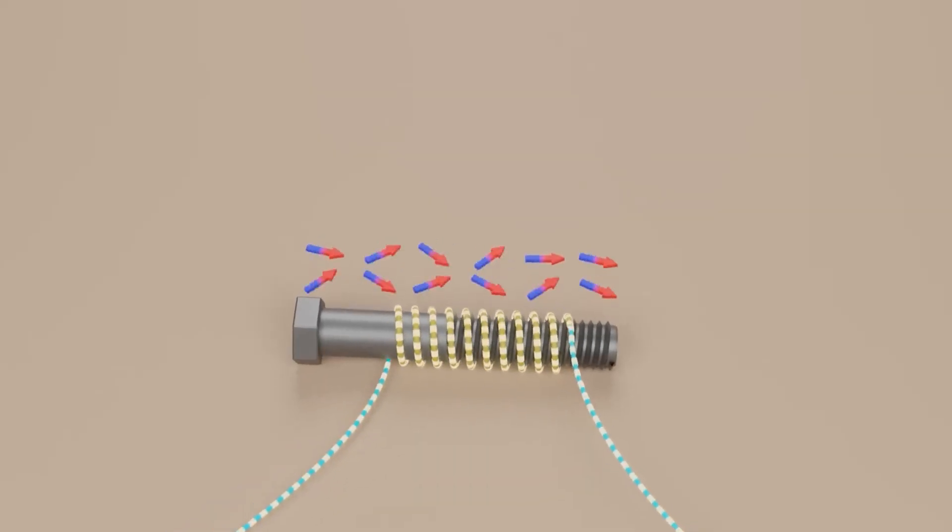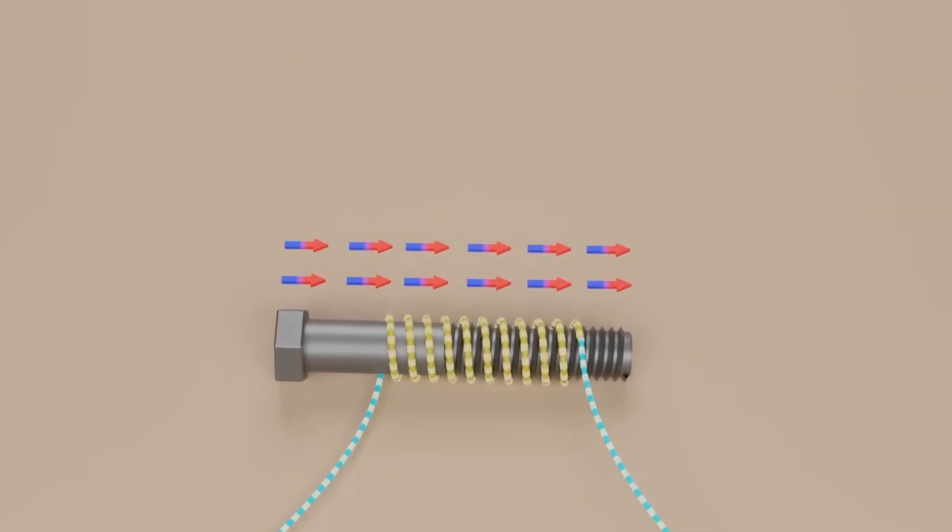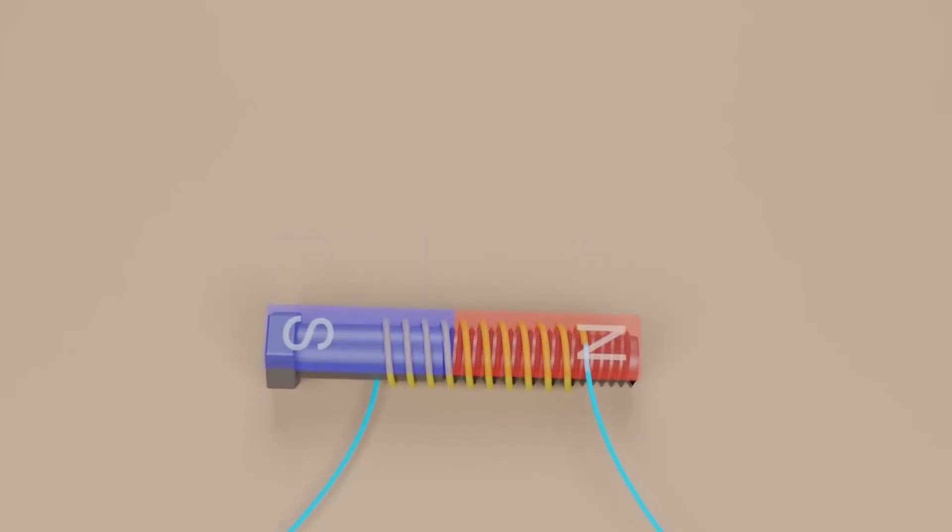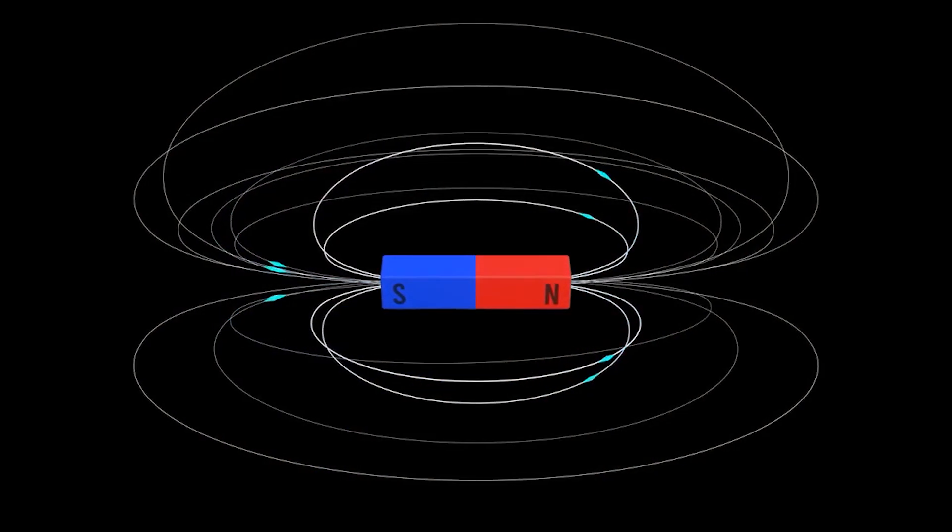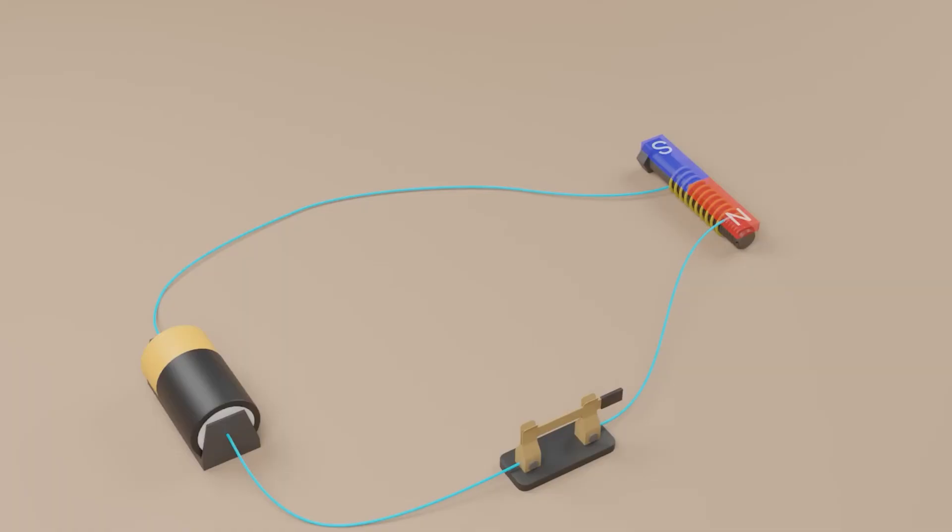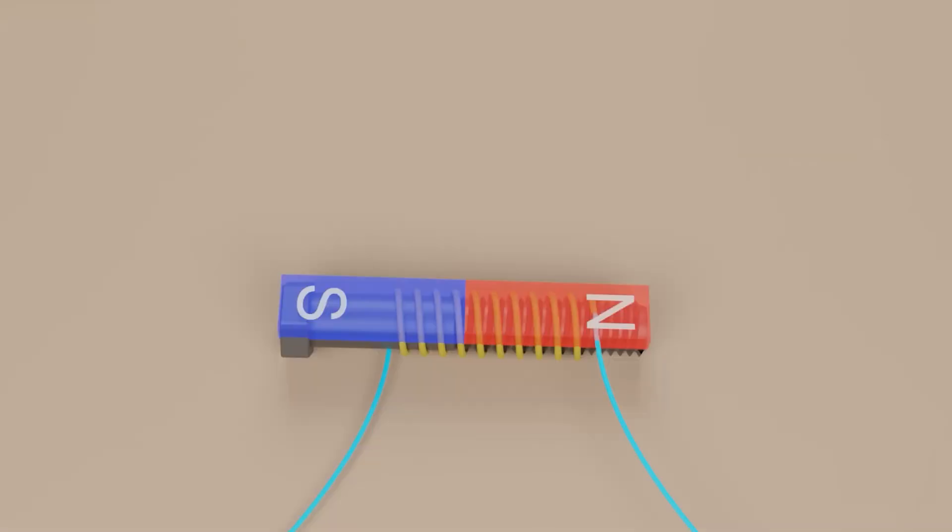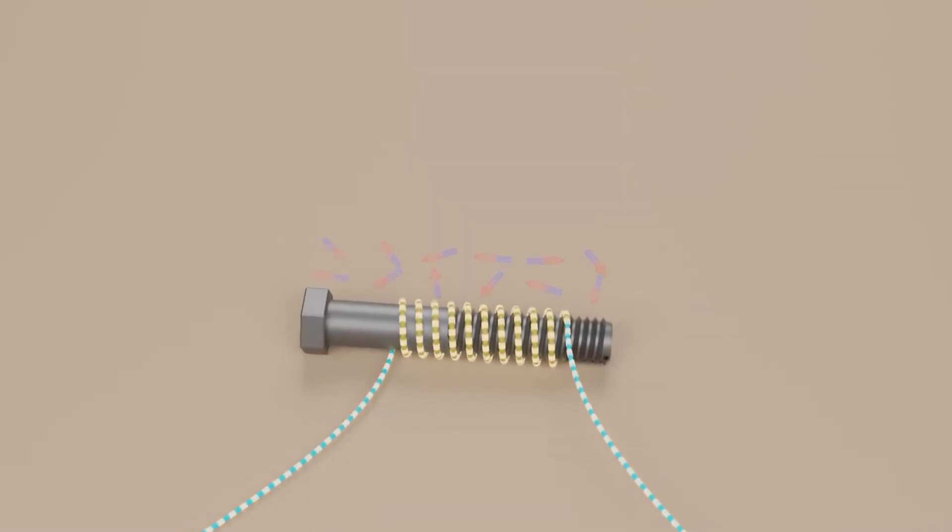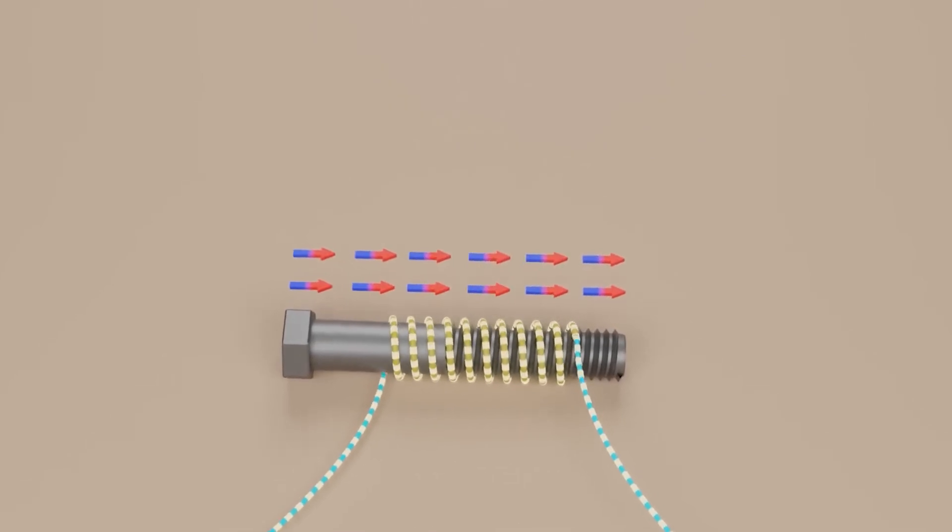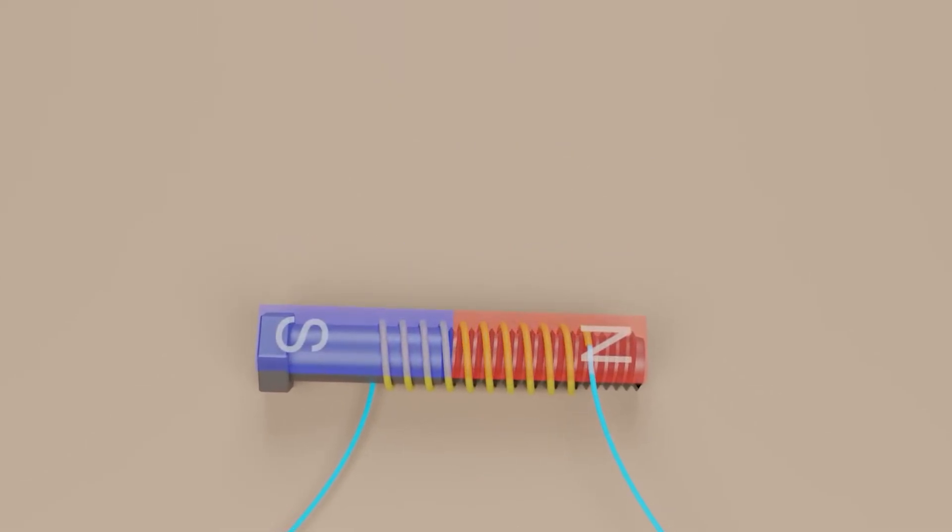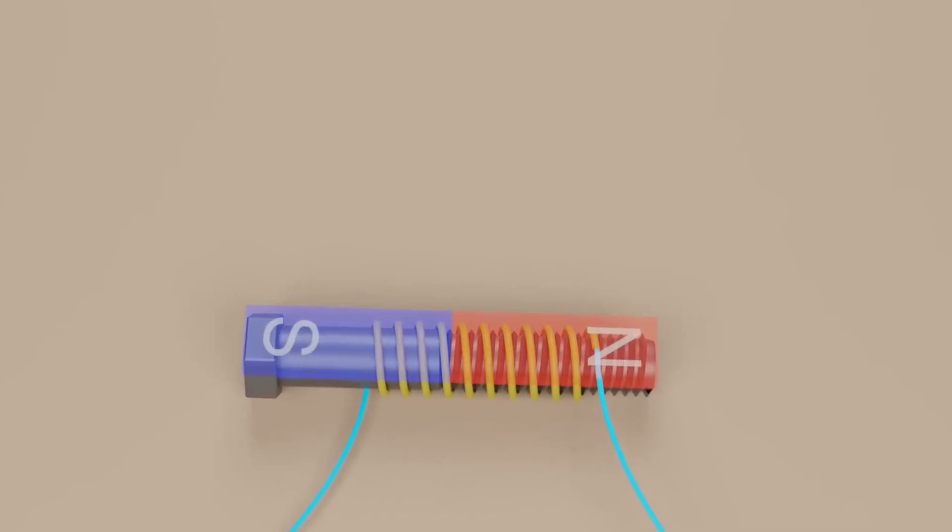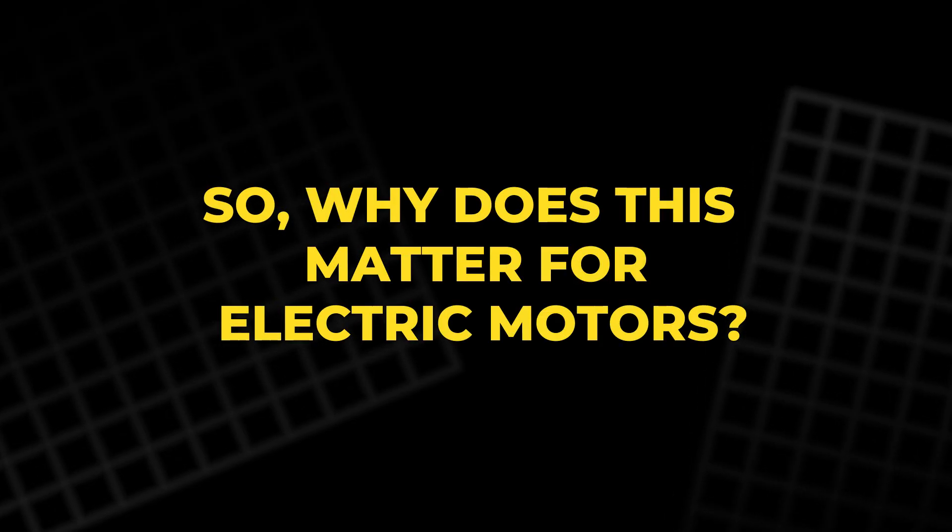But wait, there's more. When electricity flows through a wire, it creates its own magnetic field. This is the basis of an electromagnet. It behaves like a permanent magnet, but the best part is it can be turned on and off. Imagine wrapping a wire around a bolt and running electricity through it. Instantly, the bolt becomes magnetic.